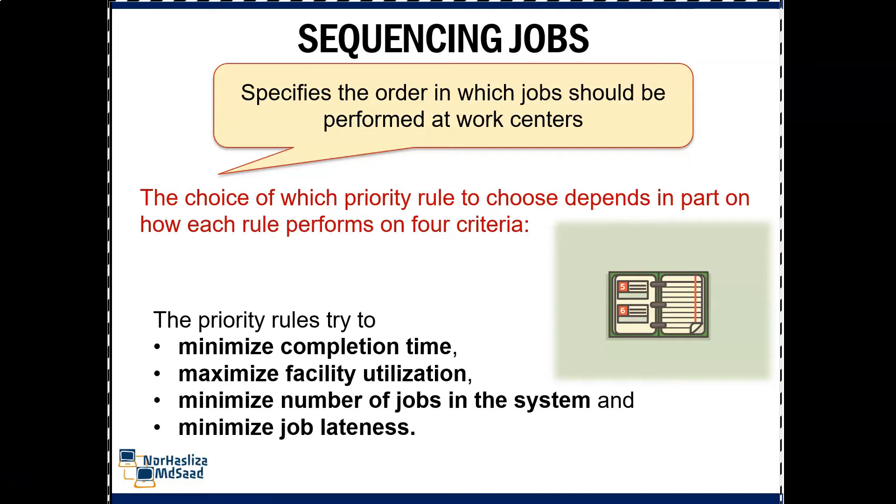Sequencing jobs specify the order in which jobs should be performed at work centers. The choice of which priority rule to choose depends in part on how each rule performs on four criteria.